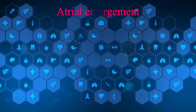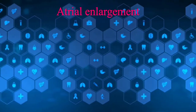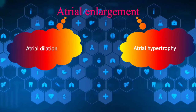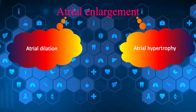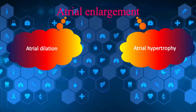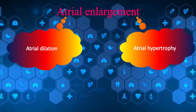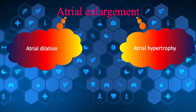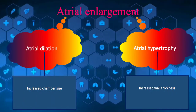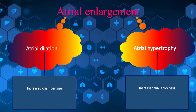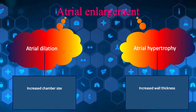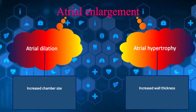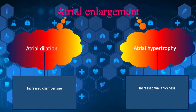Atrial enlargement happens in two different ways: atrial dilation and atrial hypertrophy. They have several basic differences. First, atrial dilation is an increase in chamber size, while atrial hypertrophy is due to an increase in wall thickness.